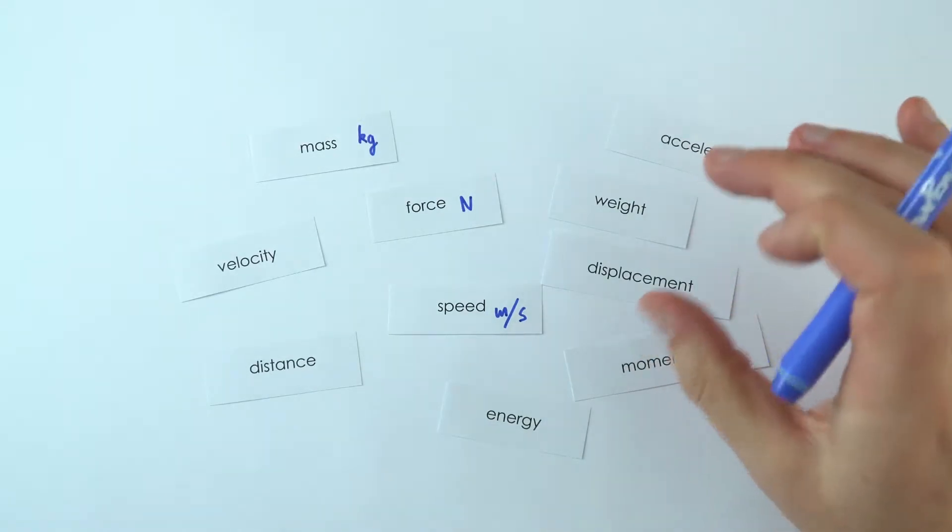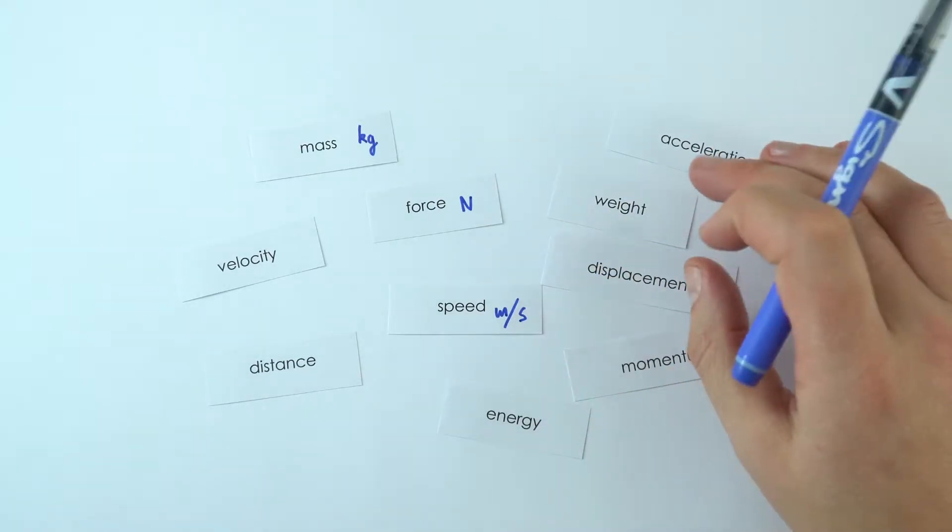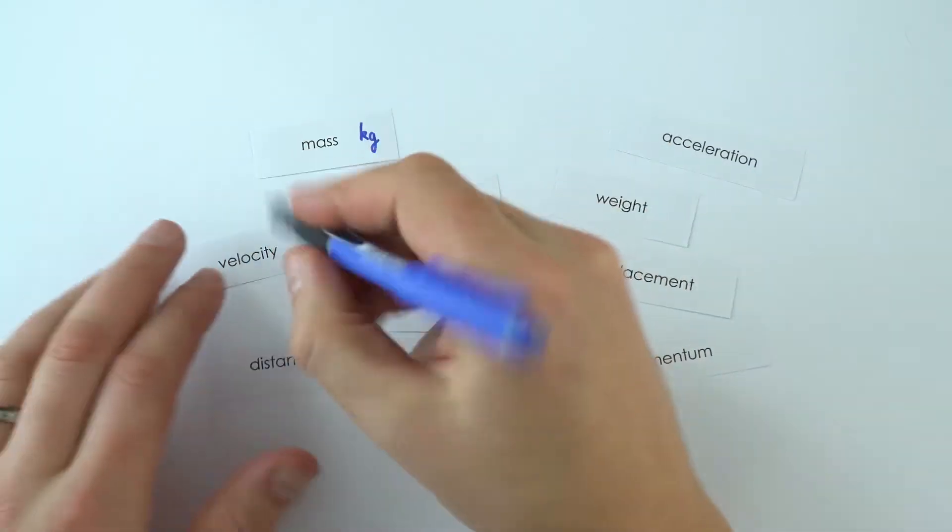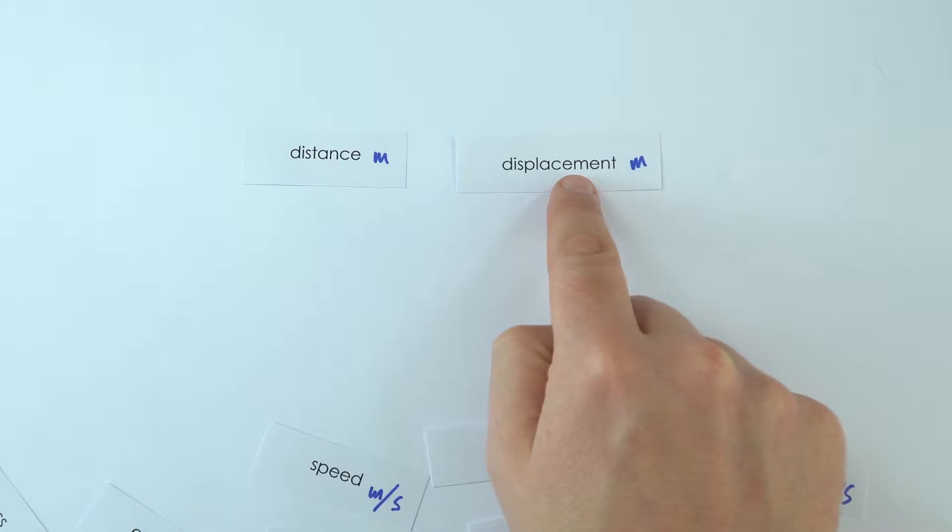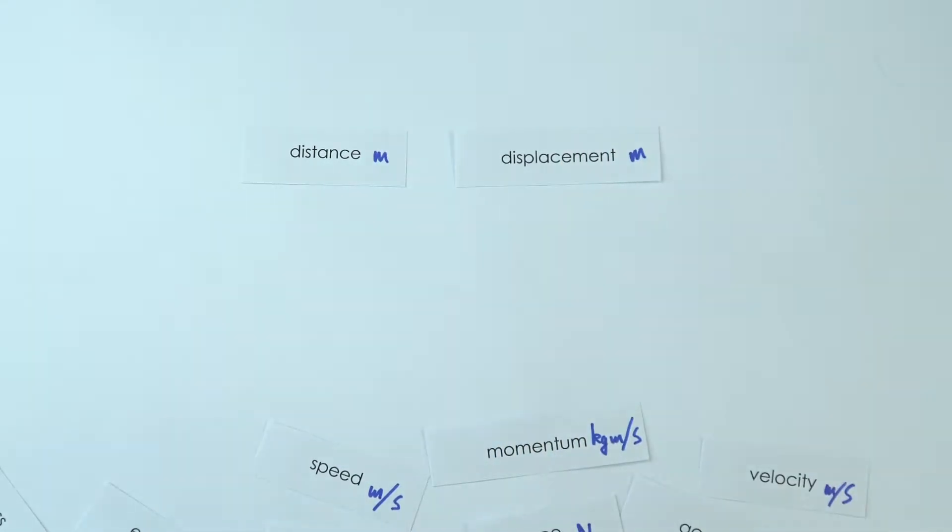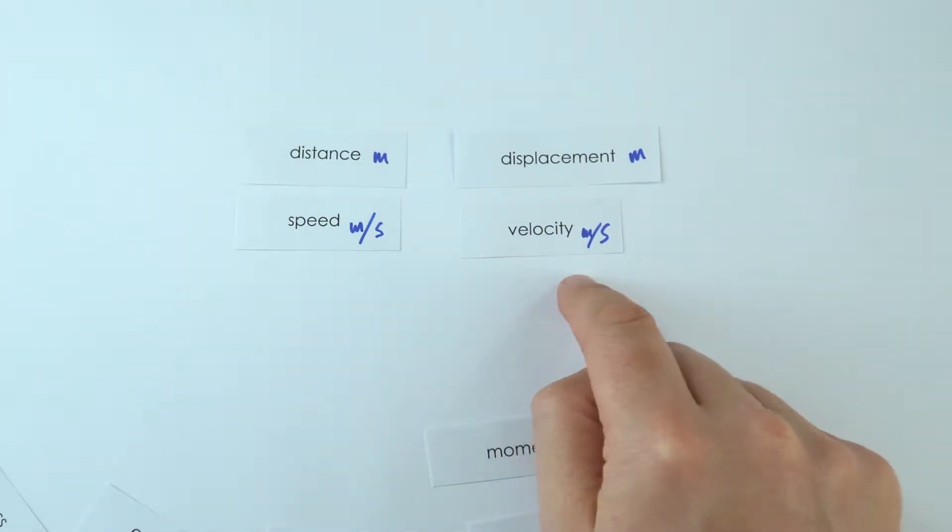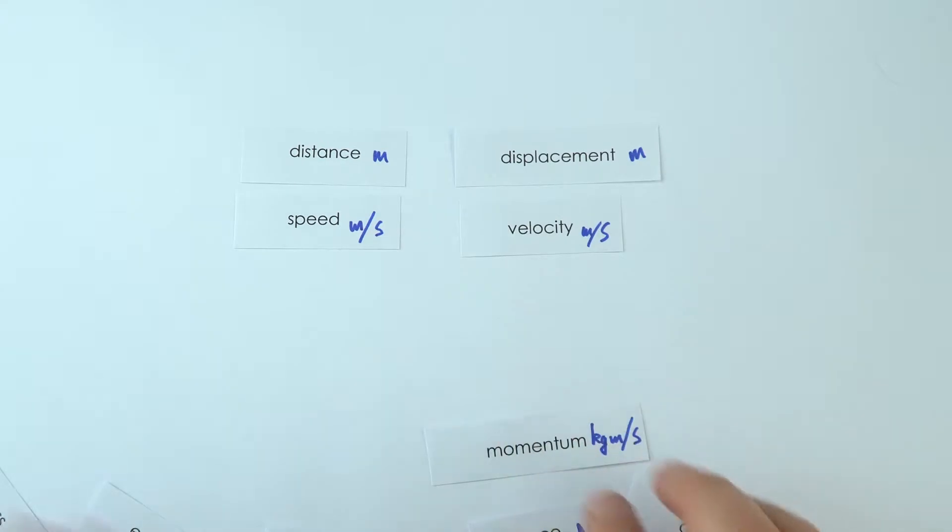Now we have a load of units for all of these different quantities, and actually what we can see is that we've got distance which is measured in meters and also this thing called displacement is measured in meters as well. We've got speed in meters per second and we've got velocity in meters per second as well. So both of these have the same units and that means they have a size. So we could have maybe 10 meters per second or we could have a distance of five meters. So all of these quantities have a size which we might give a number to.